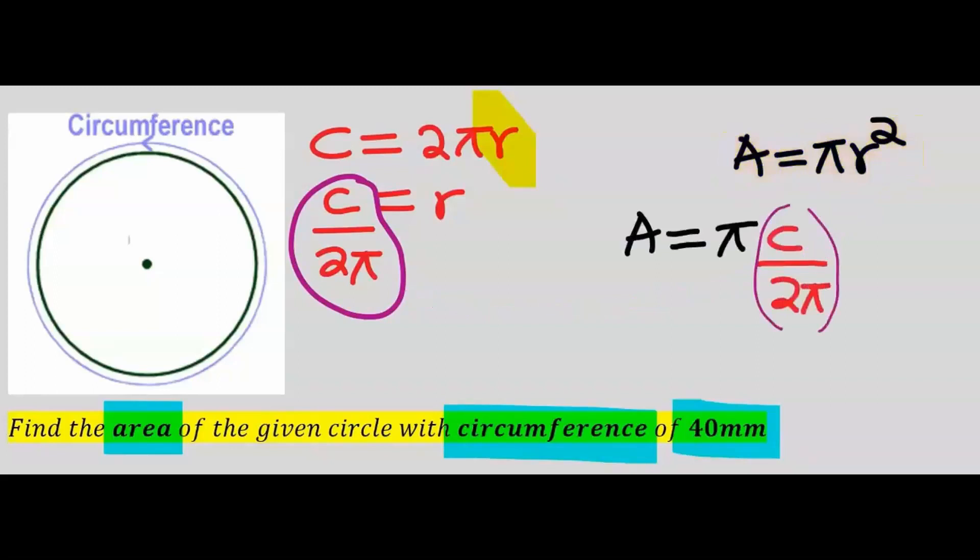the area of a circle, instead of r, I will substitute c over 2π, and remember the squared. You're going to have π multiplied by c², then 2² multiplied by π². This π will take away